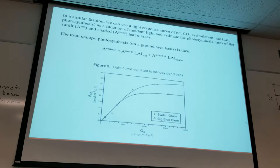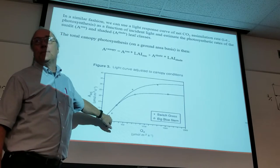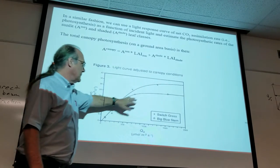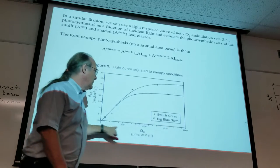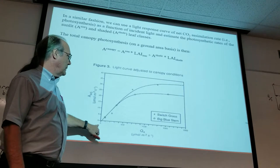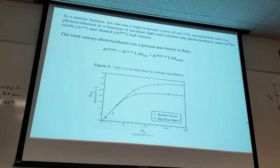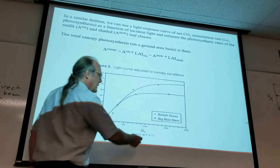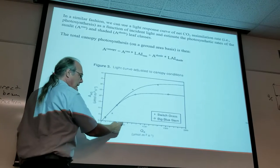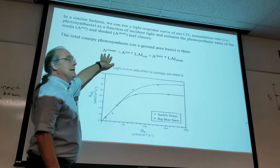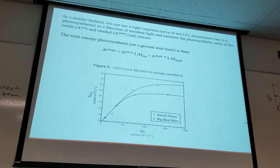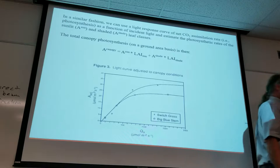Analogously, we can use not a light response curve for stomatal conductance, but let's use a light response curve for photosynthesis. That's what this is, these are two grass species. Here's light intensity, here's that net CO2 assimilation rate. You can see the two curves here. We can use the same procedure to estimate the illumination on the sunlit portion of the canopy, the shaded portion of the canopy. We can come up with an average sunlit leaf photosynthesis and calculate canopy photosynthesis based on those two classes of leaves, as if light was the only thing affecting canopy photosynthesis, which you know is not true, but it goes a long way.